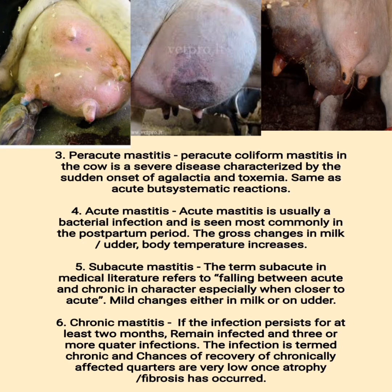(3) Peracute mastitis — peracute coliform mastitis in the cow is a severe disease characterized by the sudden onset of agalactia and toxemia, same as acute but with systemic reactions. (4) Acute mastitis is usually a bacterial infection and is seen most commonly in the postpartum period; growth changes occur in milk, udder, and body temperature increases.